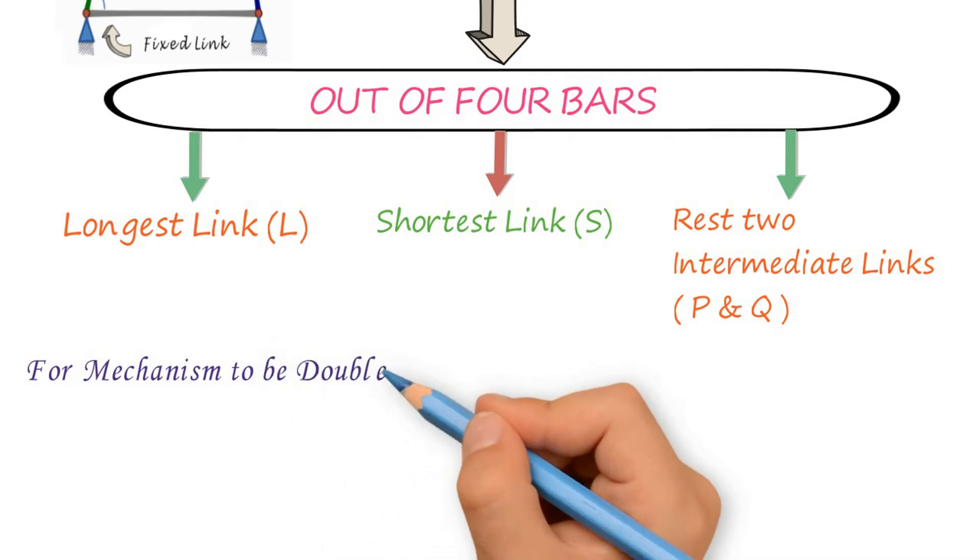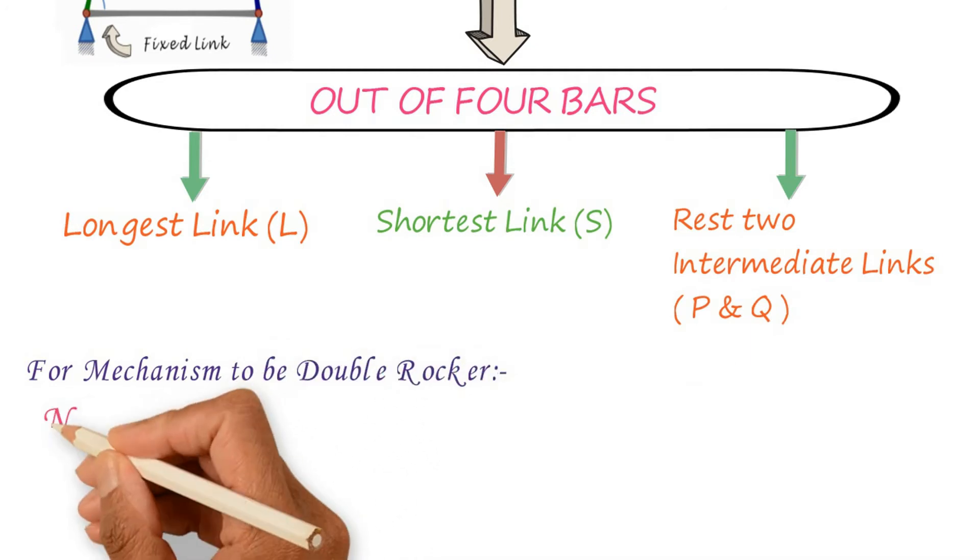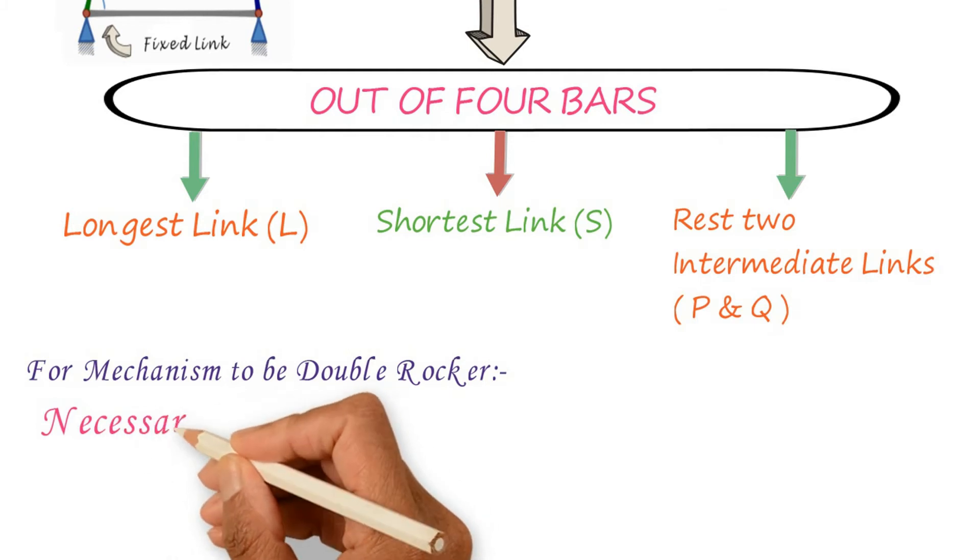For a mechanism to be double rocker, necessary conditions are: